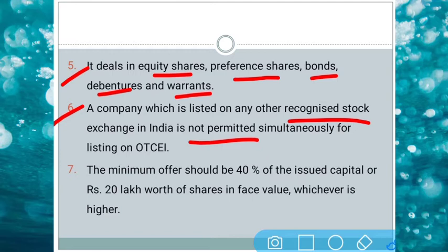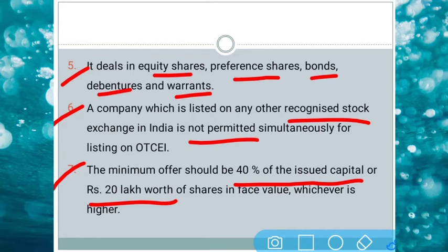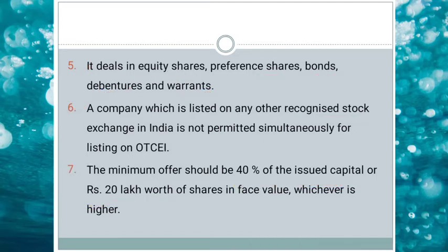Their shares can be traded at a small level. The minimum offer requirement: a company that wants to list on OTC market must make a minimum offer of 40% of issued capital or Rs. 20 lakhs worth of shares in face value. So for the IPO, a small company must offer at least 40% of their issued capital or at least Rs. 20 lakhs worth of shares based on face value, whichever is higher.